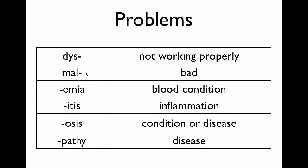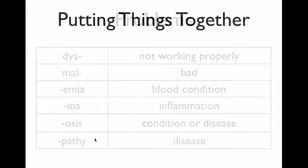Finally, some problem suffixes. Dis means not working properly. Mal as a prefix means bad — the term malady comes from this. Malaria was thought to be spread through the air, so literally malaria means bad air, though we now know it's not caused by the air. Emia refers to some sort of blood condition. Itis means inflammation — anything with itis is an inflammation. Osis is a very broadly used term for a condition or disease, as is the suffix pathy. Neuropathy, for example, is a broad term for a disease of the nervous system.